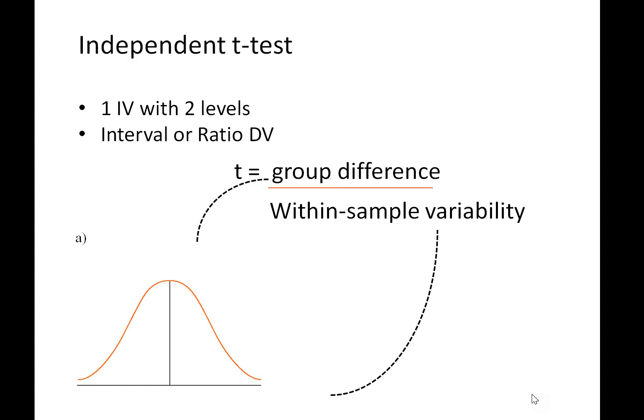In the case of the independent samples t-test, we have one IV, one independent variable, with two levels. So we're comparing group 1 with group 2. The data can be at interval or ratio level, and it needs to be the case there needs to be a meaningful difference between one or two, for example.